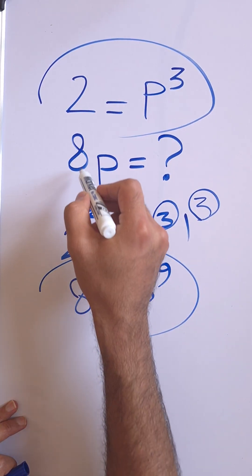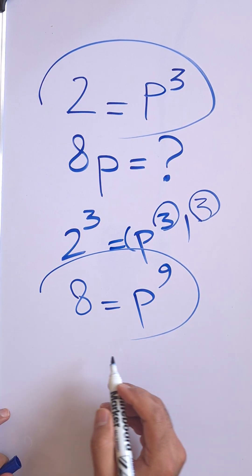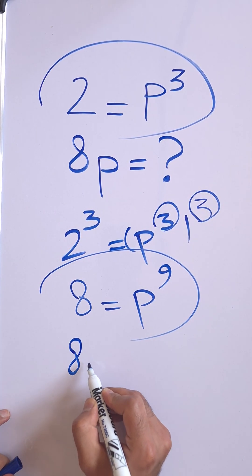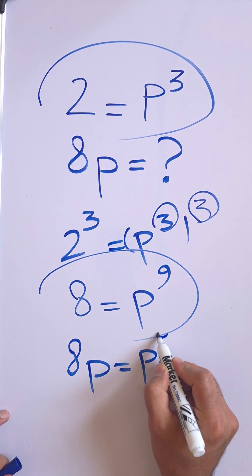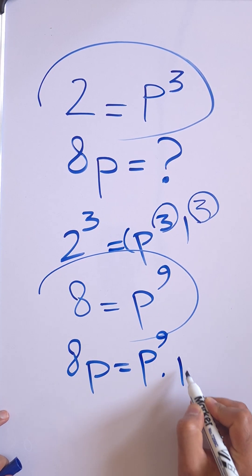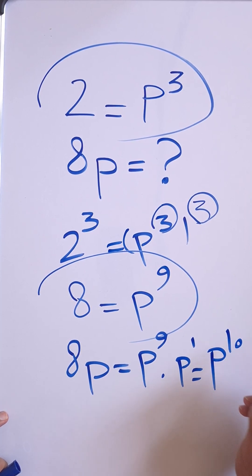We have now 8, but what is the value of 8p? So let's just multiply both sides by p. So 8p equals p to the 9 times p, or p to the 1, which is p to the 10.